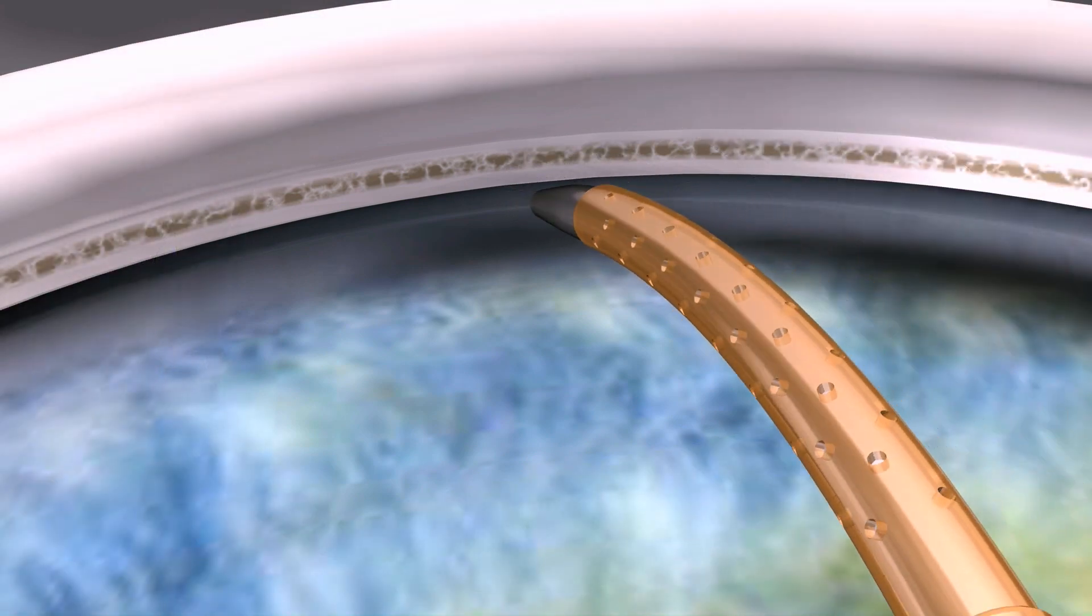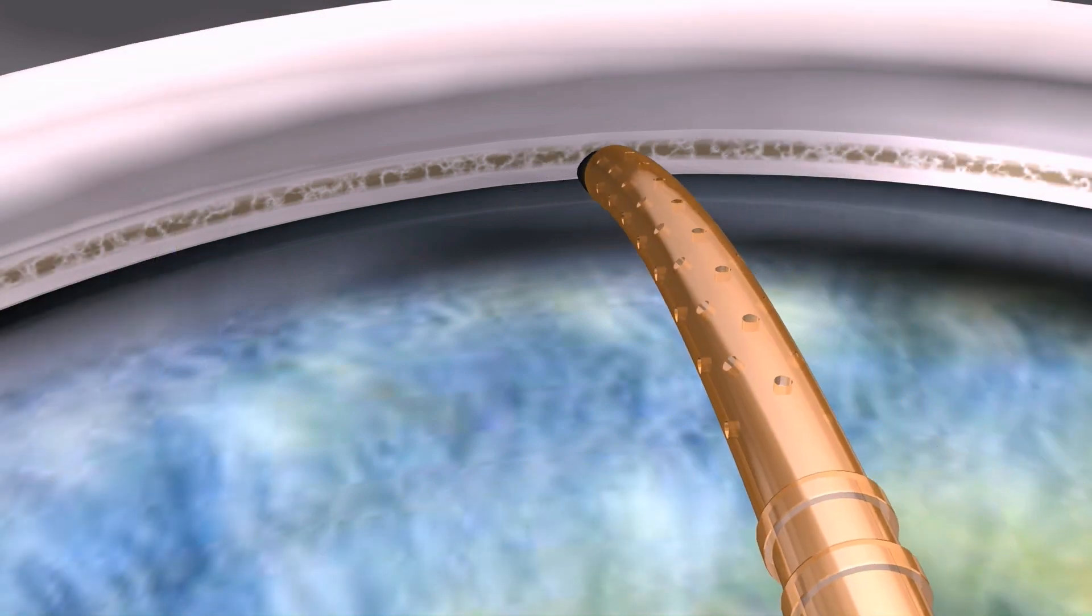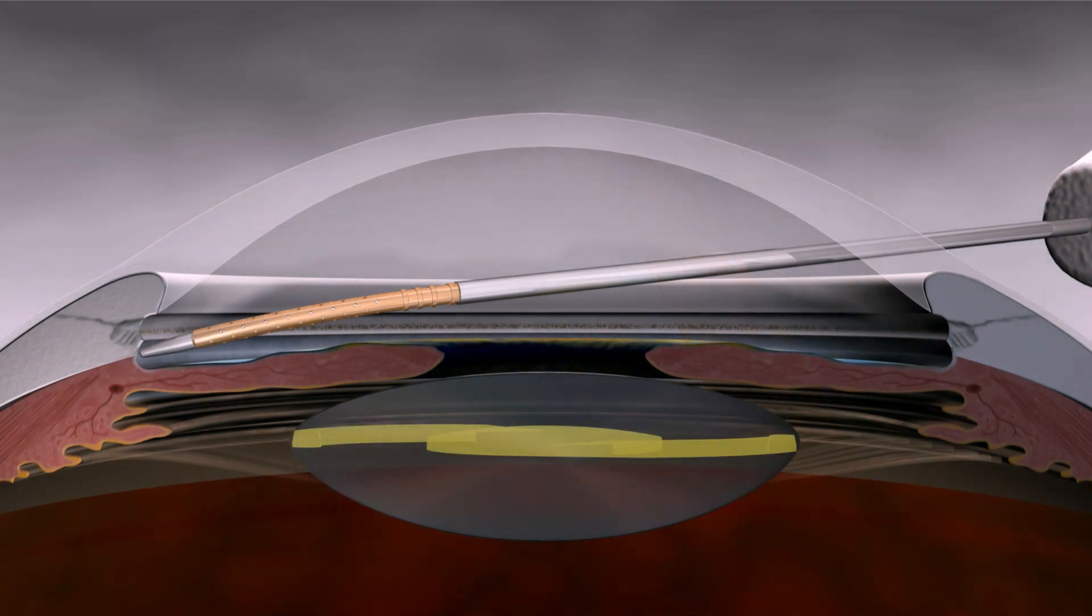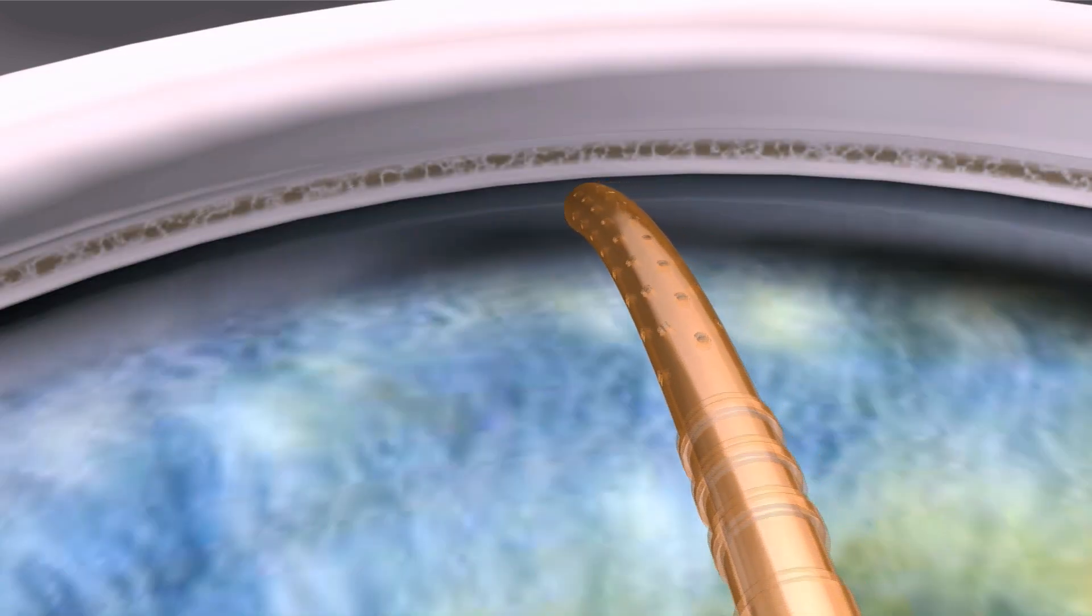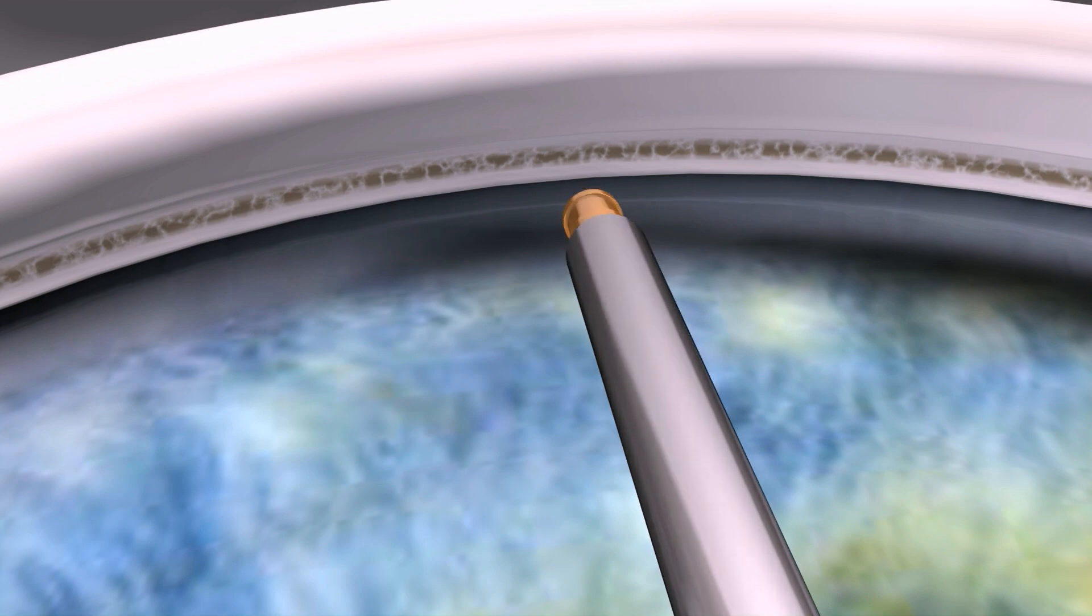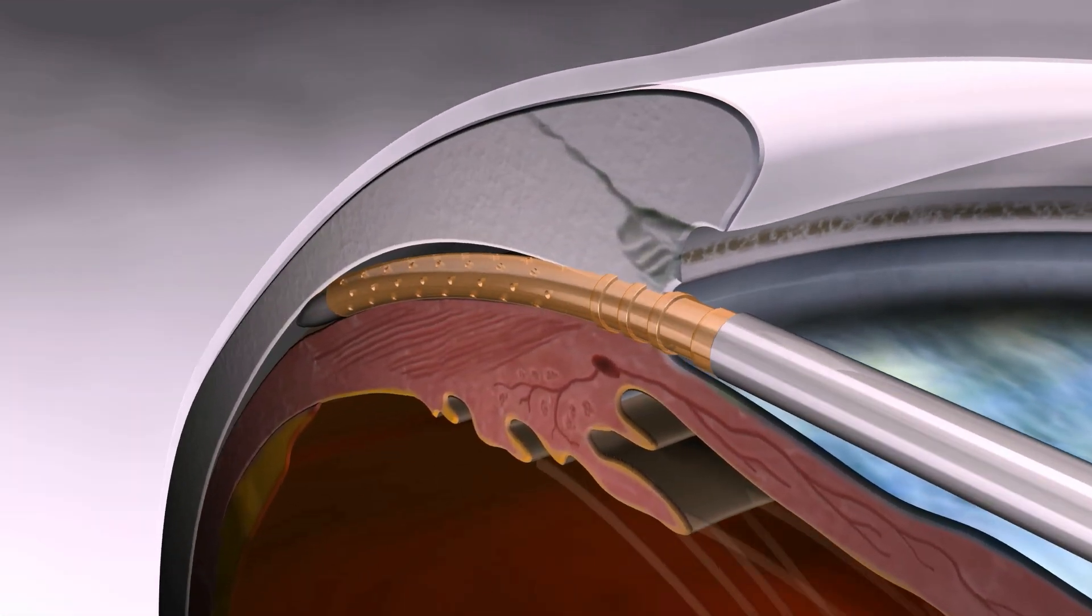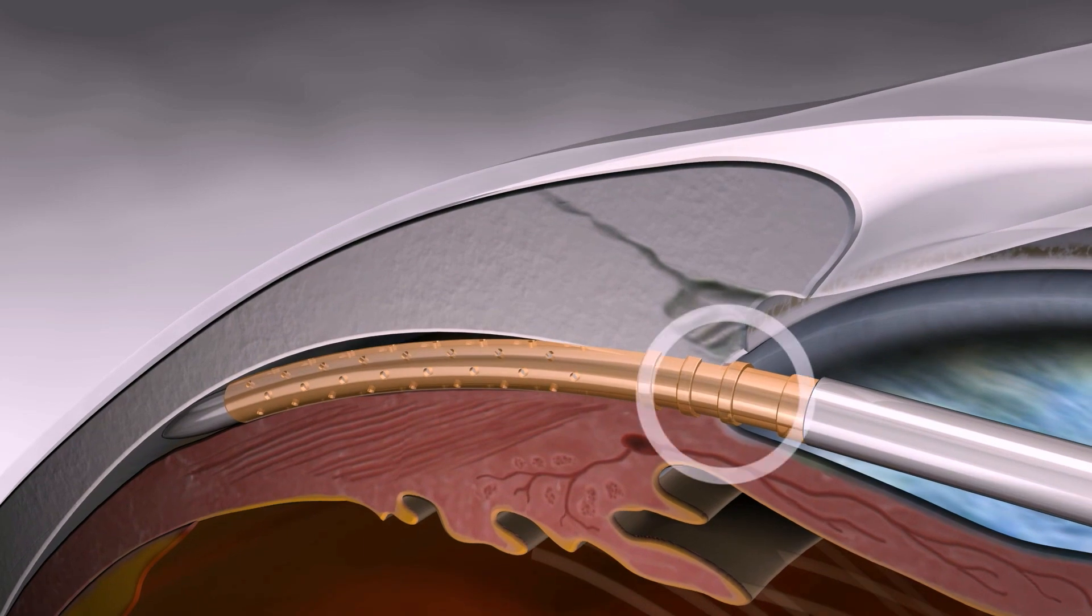The guide wire, which is shaped to match the curvature of the supraciliary space, is positioned toward the angle and introduced just posterior to the sclerospur at the iris root. The atraumatic bevel tip creates a small tissue separation between the ciliary body and the adjacent sclera through which the guide wire is advanced until only the most proximal retention ring and collar are located in the anterior chamber.